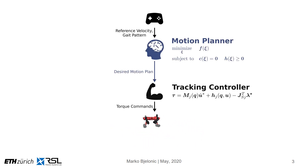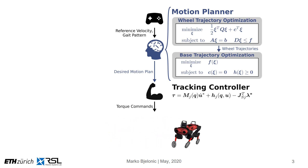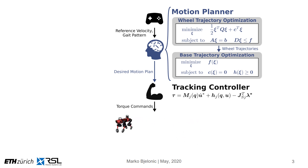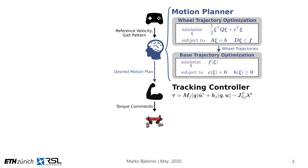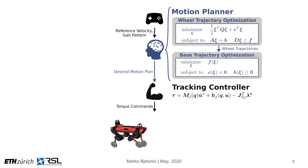I am describing the motion planner that splits the problem into wheel and base trajectory optimization. By splitting up the problem, we are able to solve the optimization in real-time on the robot in a model-predictive control fashion. The wheel trajectory optimization minimizes a quadratic cost subjected to linear equality and inequality constraints. Given these trajectories, the base trajectory optimization solves the non-linear problem as described before.